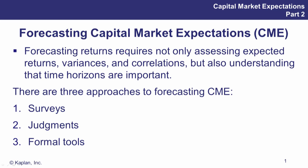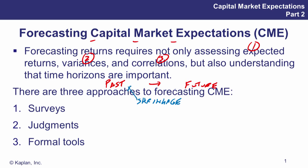They talk about our capital market expectations: number one, the returns; number two, those variances; number three, the correlations. There's a mix here of looking back at the past and also your judgement for the future. Remember the term shrinkage — they call it a shrinkage estimator or shrinkage technique. It's a term for saying two estimates are better than one. You might have a weighting for the past data and then one minus that weighting for your own judgement. So we have three methods: surveys, judgements, and some formal tools.